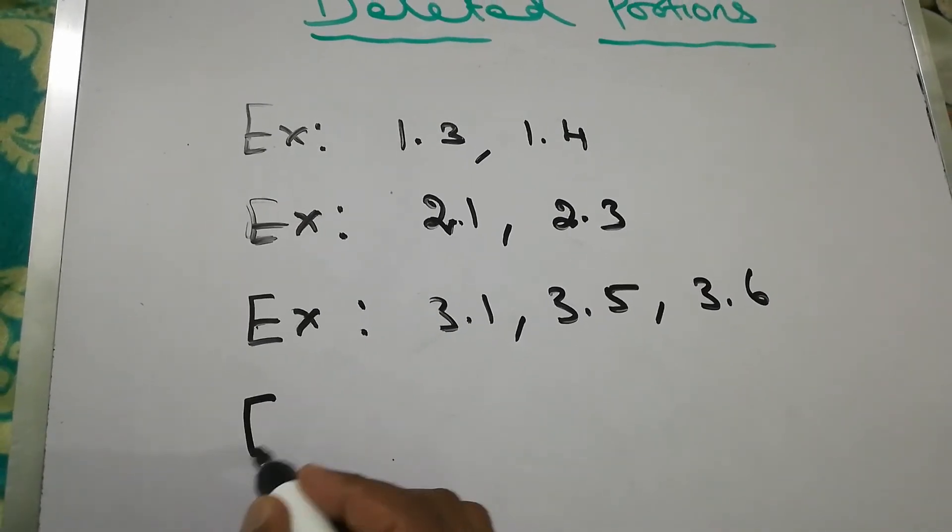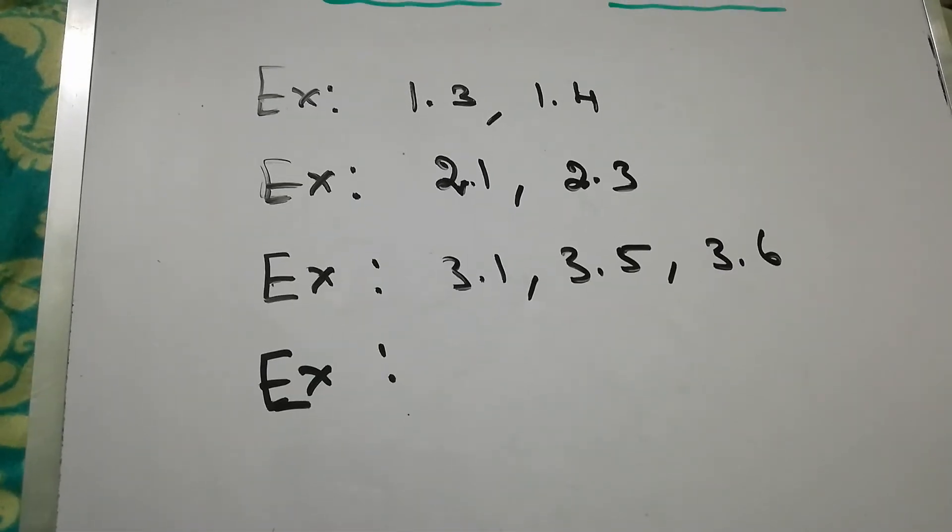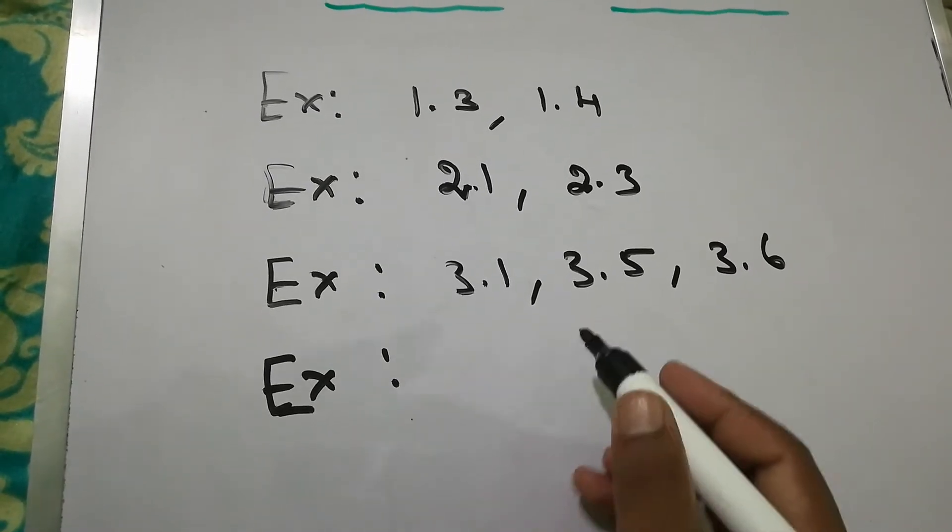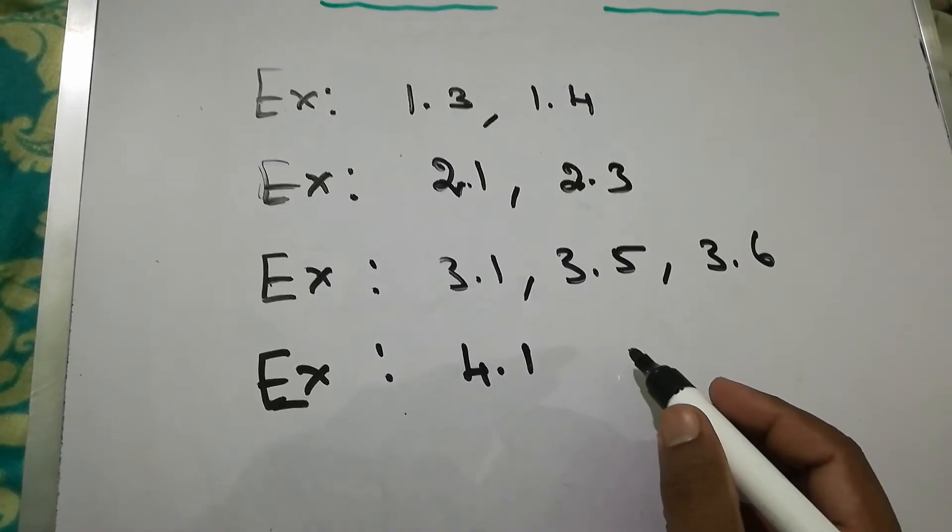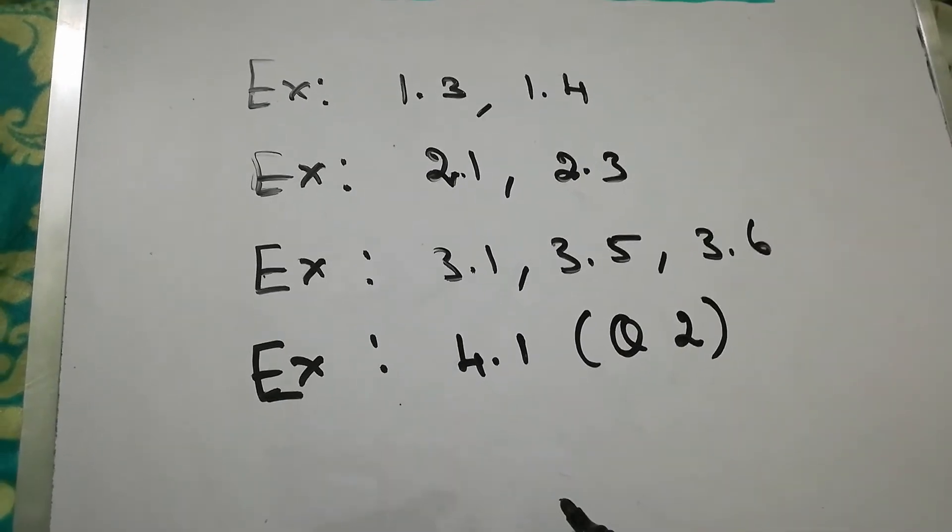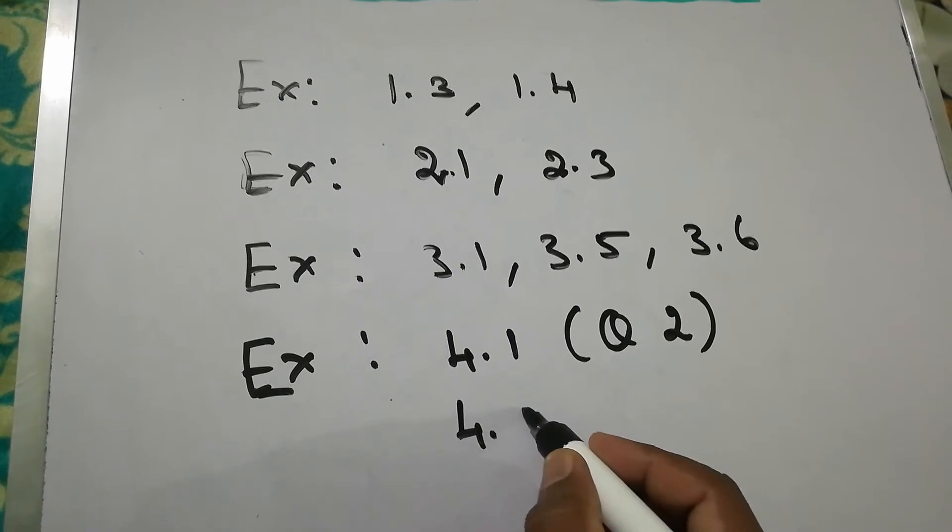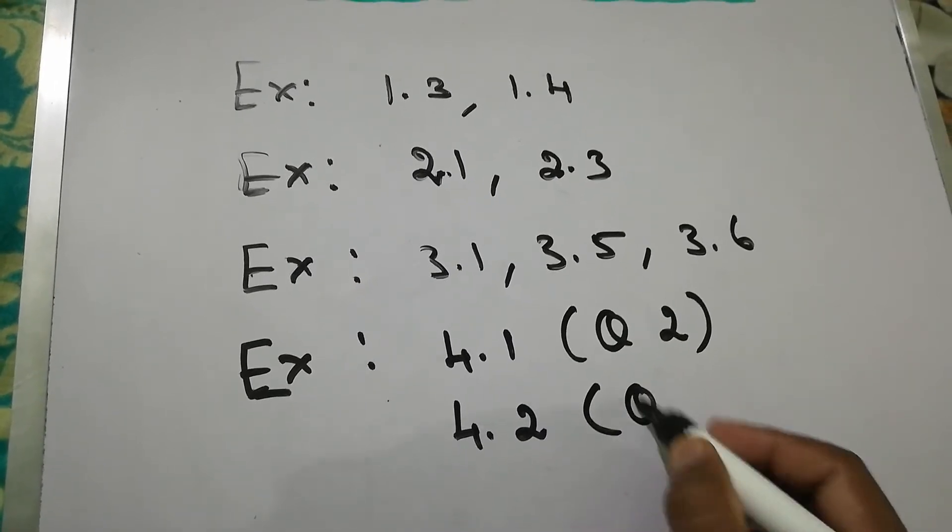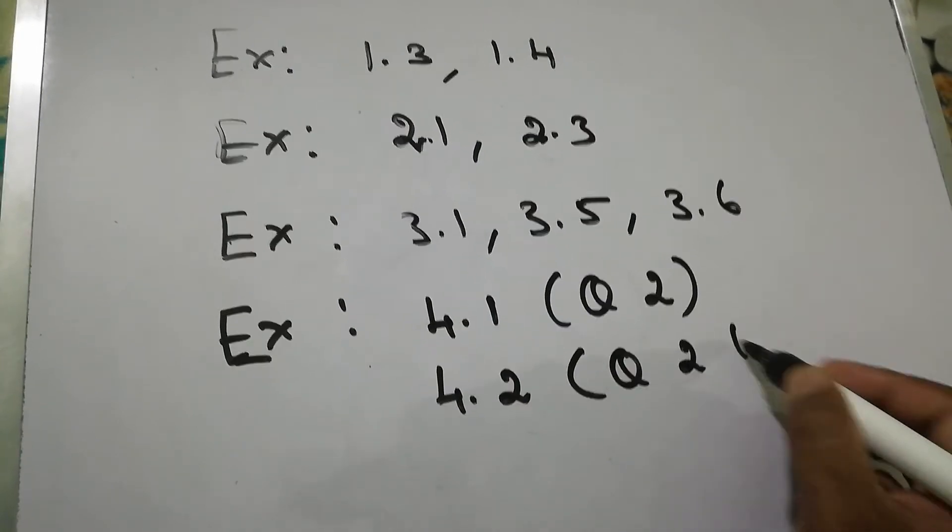And Chapter 4, the deleted one is 4.1, question number 2 is deleted. So you can just write question number 2 is deleted. And 4.2, question number 226.